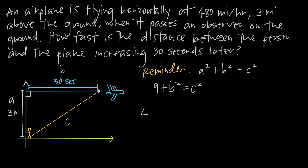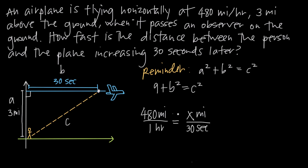We can set up a proportion: if the plane travels 480 miles in one hour, how far does it travel — x miles — in 30 seconds? We'll do a little analysis with our units. Cross multiplying: 480 miles multiplied by 30 seconds equals one hour multiplied by x miles.